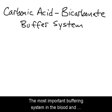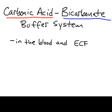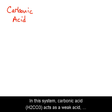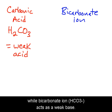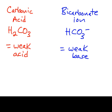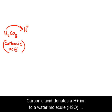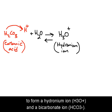The most important buffering system in the blood and extracellular fluid is the carbonic acid bicarbonate buffer system. In this system, carbonic acid (H2CO3) acts as a weak acid, while bicarbonate ion (HCO3) acts as a weak base. Carbonic acid donates a hydrogen ion to a water molecule (H2O) to form a hydronium ion (H3O) and a bicarbonate ion (HCO3).